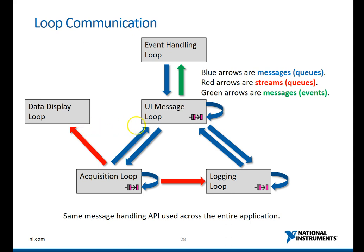If, for example, you want to stop the entire program — when you click the stop button or the exit button — the event handling loop would pass a message down to the UI message loop, and the UI message loop would pass on the message to the various different loops to actually stop the code from running. And that's all from the loop communication basics on the QMessage Handler template on LabVIEW.